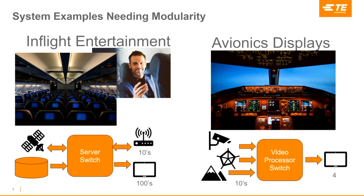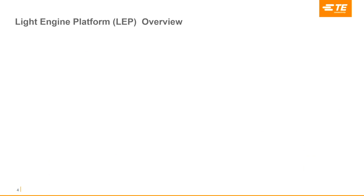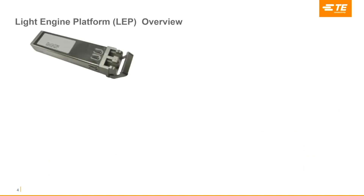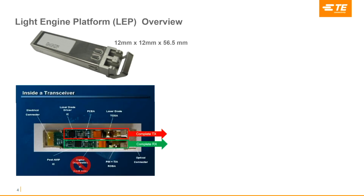Let's talk about what we call a light engine platform. This technology came out of our corporate development group about four or five years ago, originally aimed at automotive, and we've adapted it to this market. The image on screen is a datacom pluggable transceiver called an SFP+, basically a 10 gigabit device with one transmitter and one receiver, about the size of my index finger. Inside, you have a transmit circuit, a receive circuit, and some health monitoring. You can take that transmit circuit and mount it on a piece of ceramic that's a couple of millimeters square.